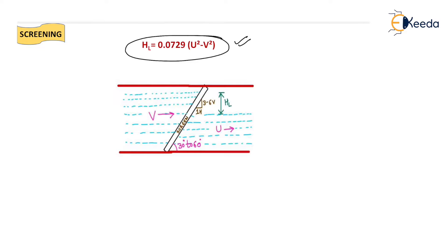Why is velocity u larger than velocity v? Because Q = AV (the continuity equation), and discharge is constant, meaning area is inversely proportional to velocity. When we provide inclination to the screen, the surface area increases, and due to the increase in surface area, the velocity gets reduced. That's why v will be less compared to u, and we use the head loss formula 0.0729(u² − v²).